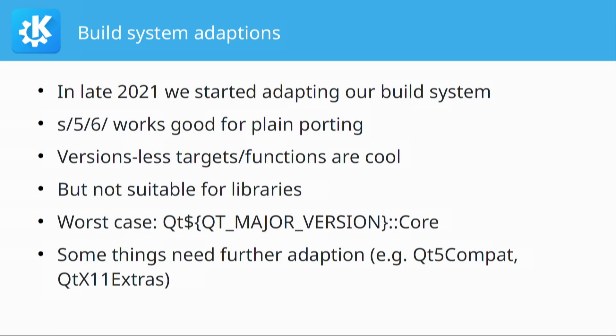This gets you about 95% there, with a couple of places still needing manual intervention — for example, conditionally adding the Qt 5 Compat library to your link step since it's only available in Qt 6, or handling that Qt X11 Extras moved from being its own module to being part of Qt Base.